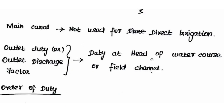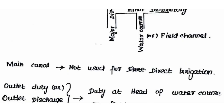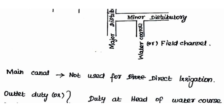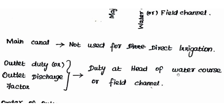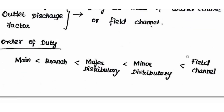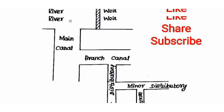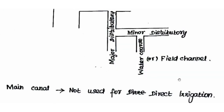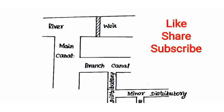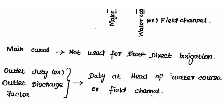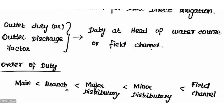Outlet duty, or outlet discharge factor, refers to the duty at the head of a watercourse or field channel. The intersection of the Minor Distributory and the field channel or watercourse is the outlet point. Duty is higher at the field channel level. This is a repeated MCQ — duty is higher at the field channel.